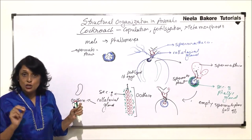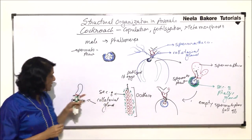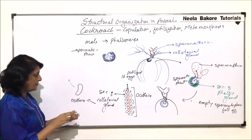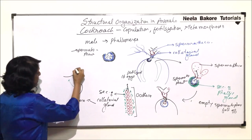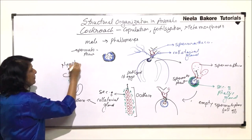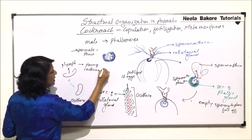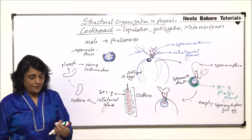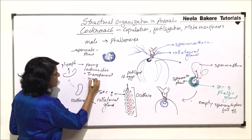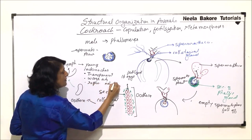The shape of the ootheca is changed by the ovipositor — it becomes a little bent with a concavity from where the ootheca ruptures and the nymphs hatch. When the ootheca ruptures, what comes out are called nymphs — young cockroaches. These nymphs are more or less transparent, wings are absent, and the reproductive structures are also not yet developed.